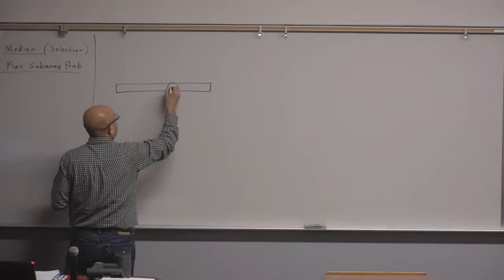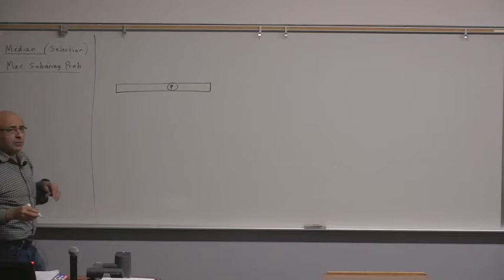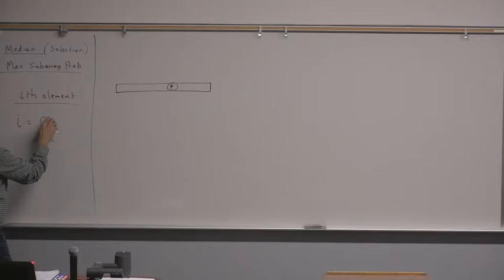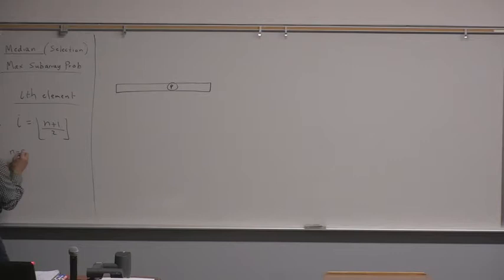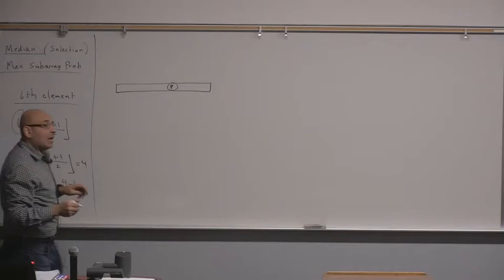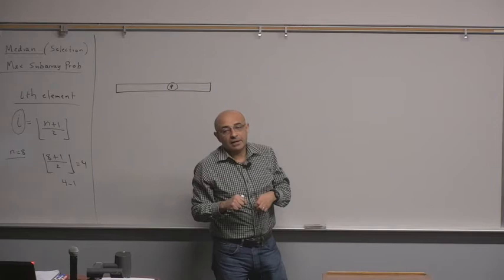We're not necessarily looking for the median. We will be looking for the i-th element — the element whose order is i. So i could be 0, 1, 2, 3, 4. When i equals the floor of (n+1)/2, for example if n equals 8, that's 4, this will give the higher median, and the lower median is 4 minus 1. But generally, the algorithm allows you to select the i-th element, even if you're interested in the element that ranks 1 million.